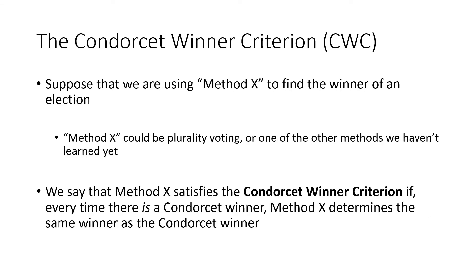This is the idea behind the Condorcet Winner Criterion. Whatever method we're using — call it method X — it satisfies the Condorcet Winner Criterion if, whenever there is a Condorcet winner, the method determines the same winner as the Condorcet winner. There isn't always a Condorcet winner, but when there is one, we want our method to give that same answer.